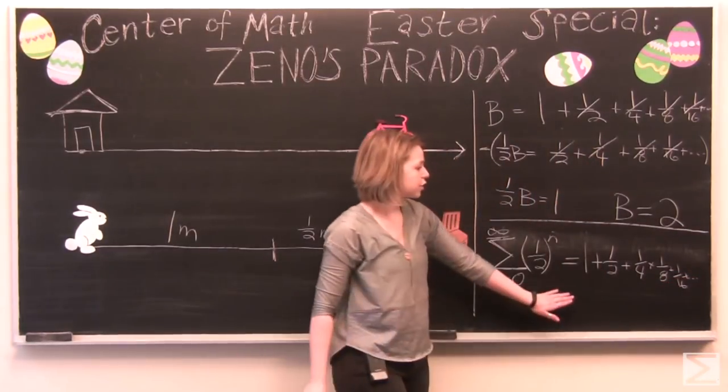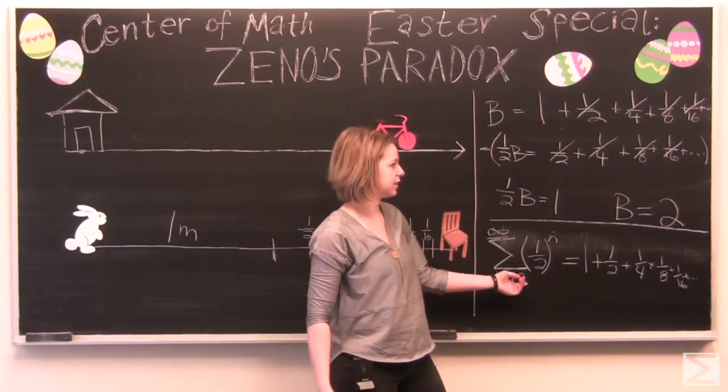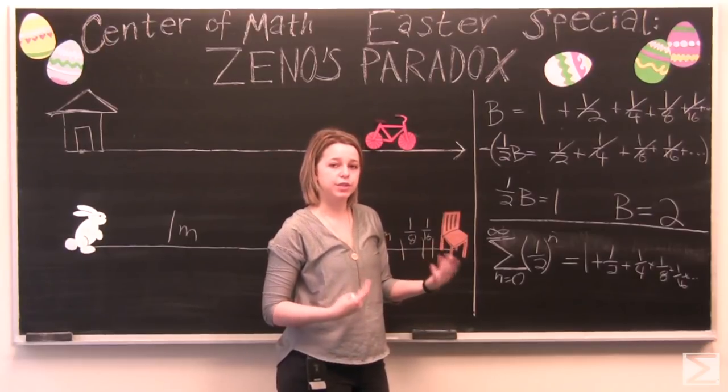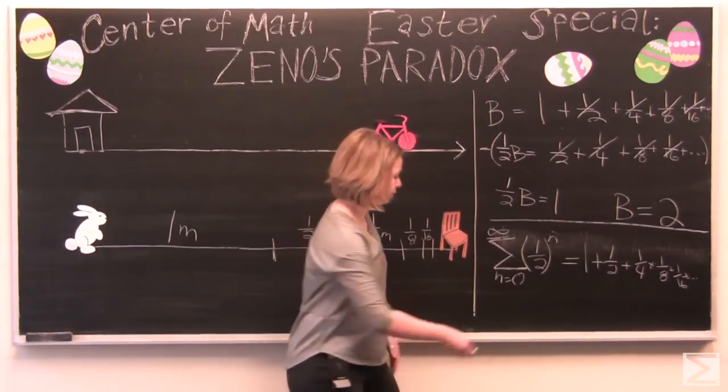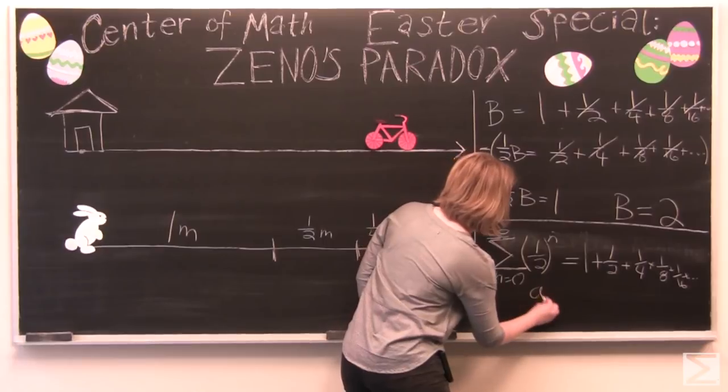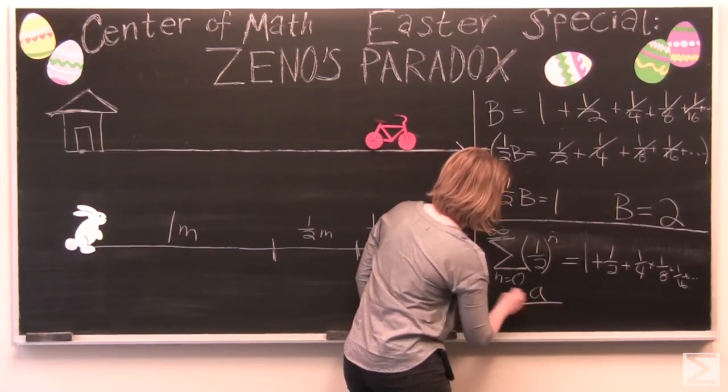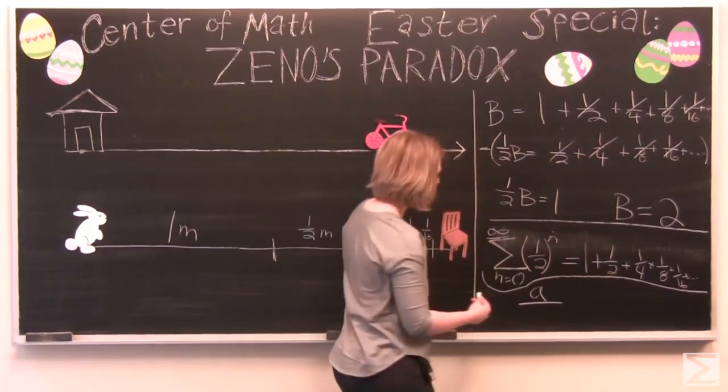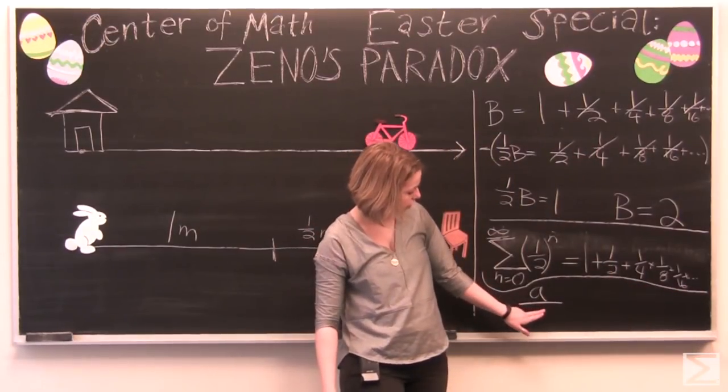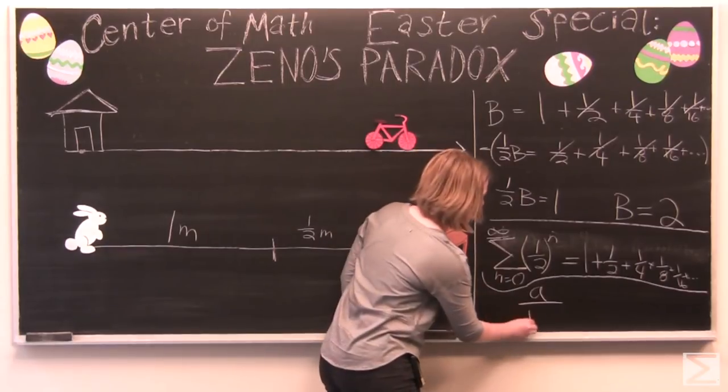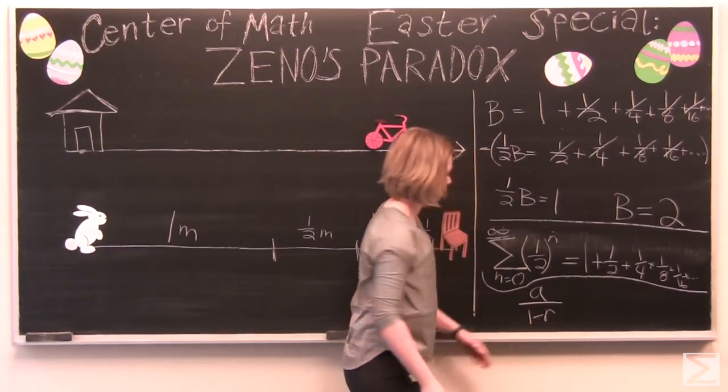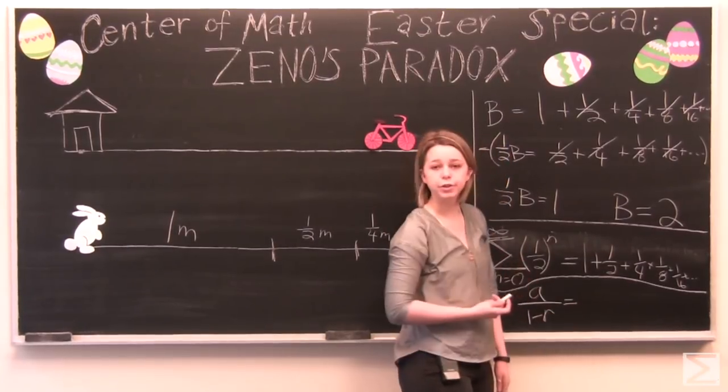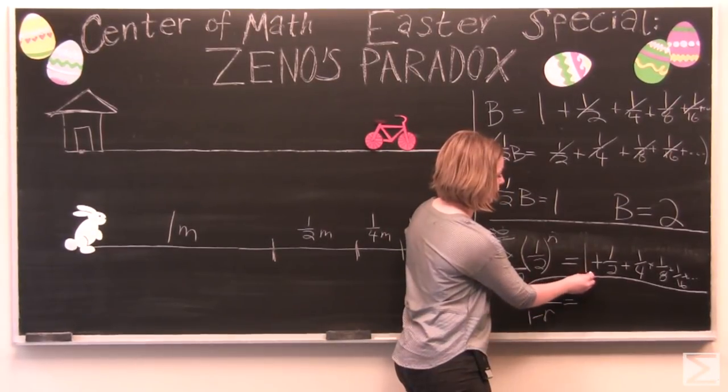And in order to prove that this is the same equation and it's equal to two, we can use the formula to sum up an infinite series. So our sum is going to be equal to a. Let me divide this out here so that we've got a clear space. So our sum is going to be equal to a over one minus r. Where a is equal to the first term in our series. In this case it's one.